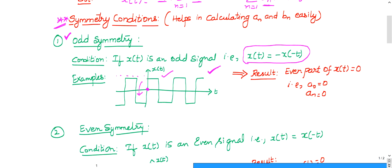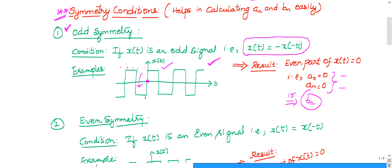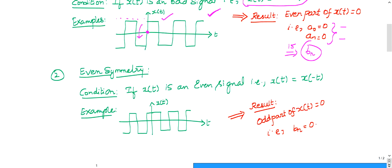Whenever the given signal is an odd signal, conclude that the even part — that is, a0 and an — are zeros. For bn, you need to find it by normal integration; you cannot escape that. It takes 15 minutes, but 35 minutes is reduced to 15 minutes, so that is acceptable.